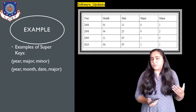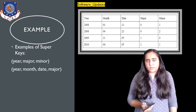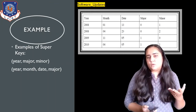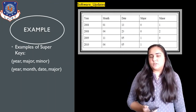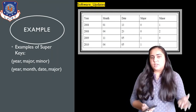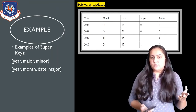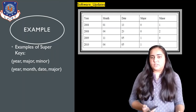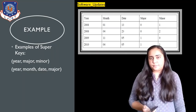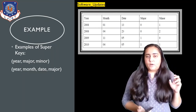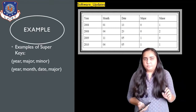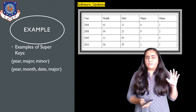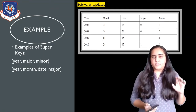You can also call major and minor together a super key, because their combinations are unique — 0,1 and 0,2 and 1,0 and 1,1 are not repeating. So any columns taken together can be said to form a super key if the combination is unique. Another example of a super key is year, month, date, and major together.